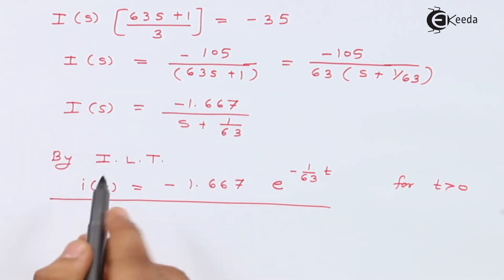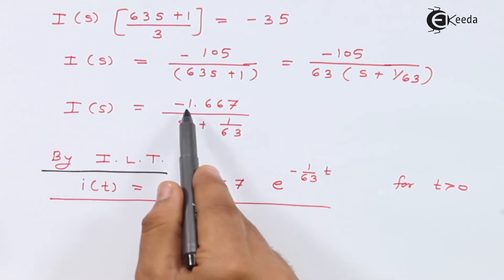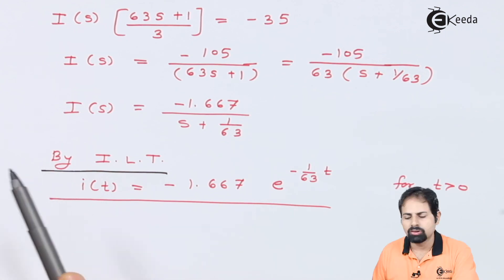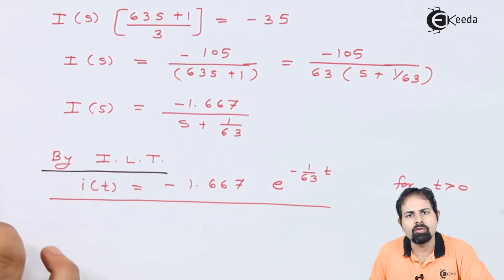And so when I apply inverse Laplace transform, I(s) becomes i(t). This minus 1.667 as it is. And you know the formula: 1 upon s plus A, the Laplace transform of 1 upon s plus A is nothing but e raise to minus A t. And that is our answer. So this is how I got the current for this complete problem. That's all, that is the answer. So thanks for watching this video, and please subscribe to Ikeda. Thank you.